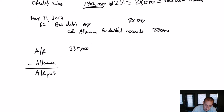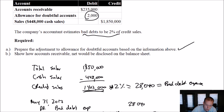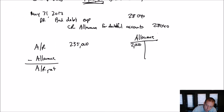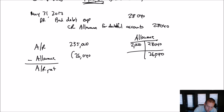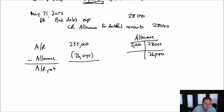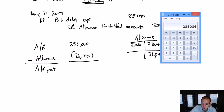Our allowance started at a $2,000 debit balance from the question. We've just credited it $28,040, which gives us an ending allowance balance of $26,040. So our net accounts receivable is $235,000 minus $26,040, which equals $208,960.